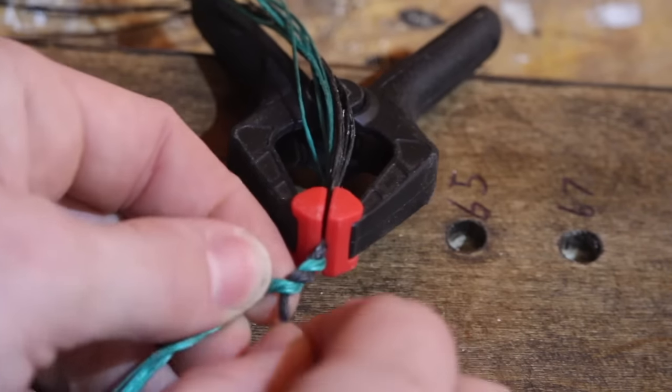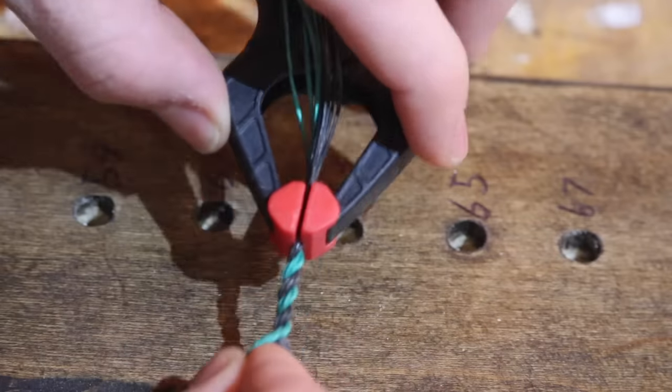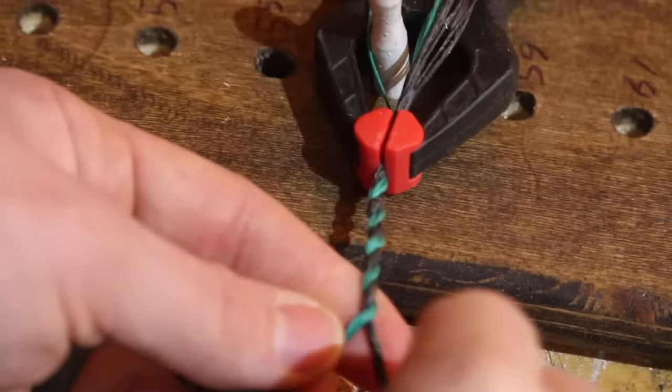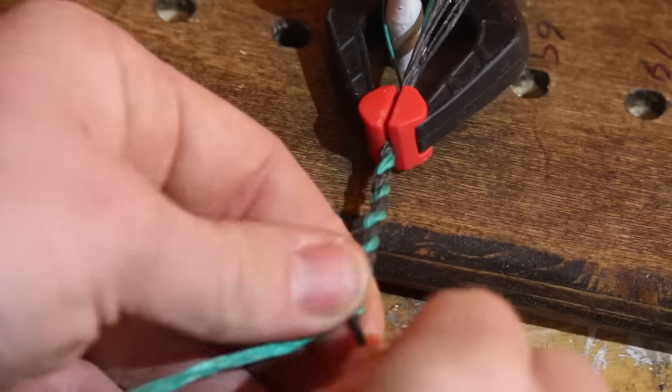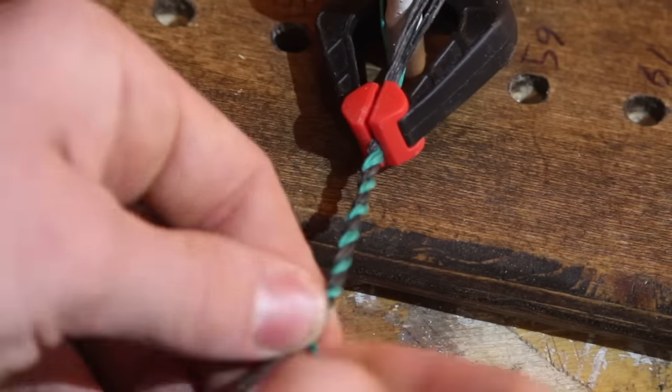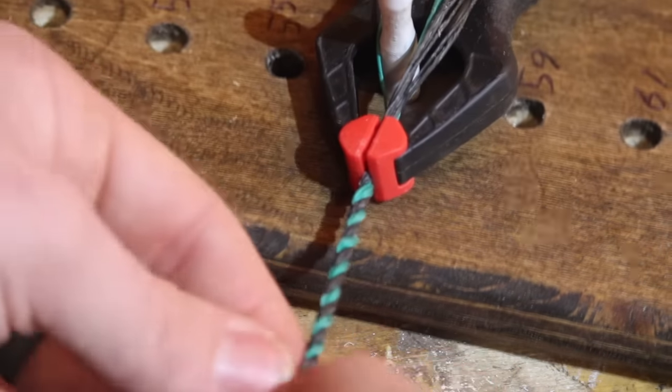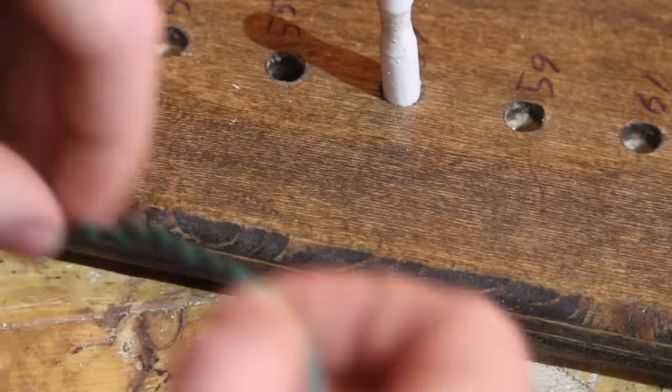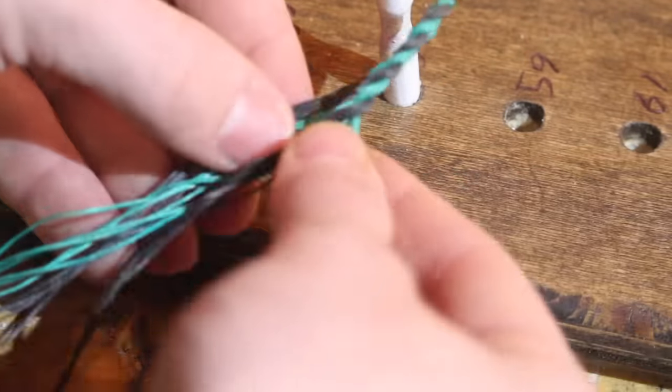The size of the loop you end up making is going to be completely dependent on the size of the nocks on your bow. For most longbows, two inches is a good starting point for the size of the nock loop, especially for the bottom loop because the bottom loop we're going to make is going to definitely be smaller than the top because that one stays there all the time.